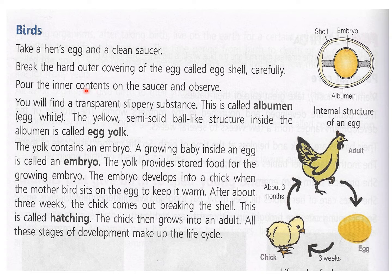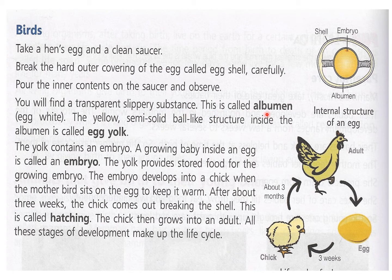Pour the inner contents onto the saucer and observe. Inner contents means the things inside the egg — you have to pour them onto the plate and observe. You have to see what is inside the egg. You will find a transparent slippery substance. This is called albumin, or egg white. That white slippery substance on the outside portion of the yellow is transparent and white in color — that is egg white and it is called albumin.